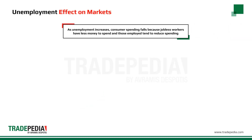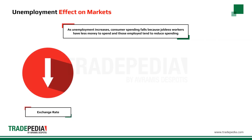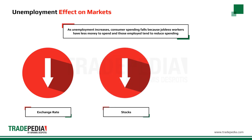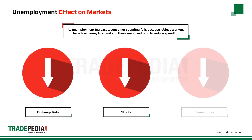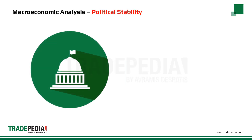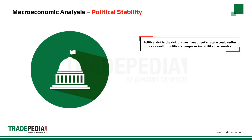As unemployment increases, consumer spending falls because jobless workers have less money to spend, and those employed worry about the future and also tend to reduce spending. When a high level of unemployment exists, economic growth suffers, demand drops, and this will eventually result in depreciation in the value of the currency. An increase in unemployment leads to lower consumer spending, which hurts businesses and drives stock prices down. The same effect is seen across commodity prices as demand decreases due to lower production levels.